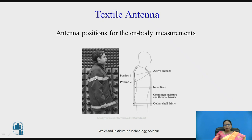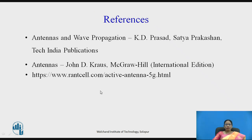Textile antennas are another application. A person wearing a jacket would not realize it contains antennas — between the outer and inner layer, active antennas are positioned for moisture measurement and body parameter monitoring. These are very interesting applications of active antennas in textile-based wearables.